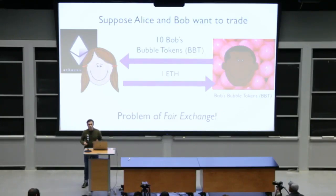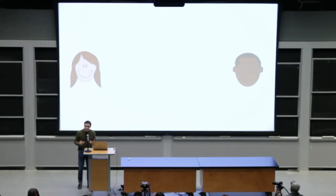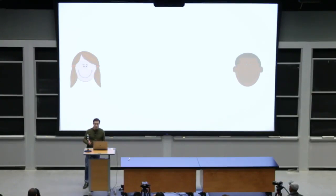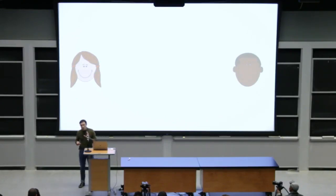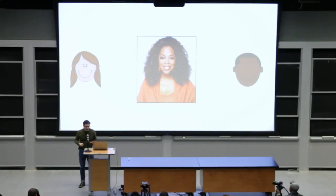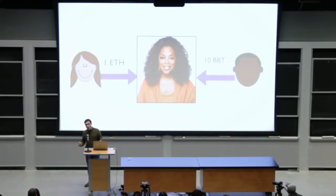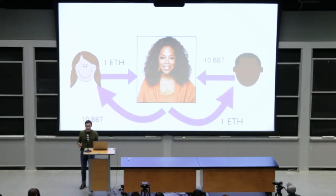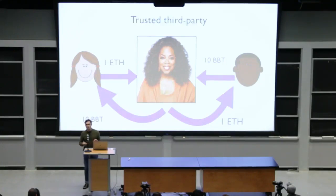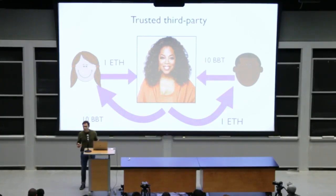How, in an ideal world, would Alice and Bob resolve this problem? Ideally, they would like to appeal to a third party whom everyone in the world trusts to behave in an open and even-handed and honest manner. In other words, what they really want is Oprah. If they had Oprah, life would be simple — they could send their assets to Oprah, and Oprah would distribute them fairly. What they really want is a trusted third party. The problem, of course, is that Oprah is generally booked.